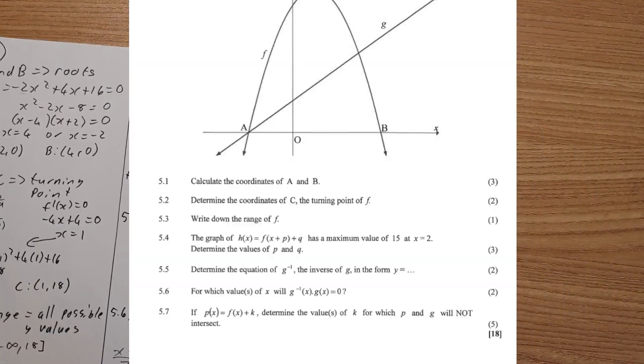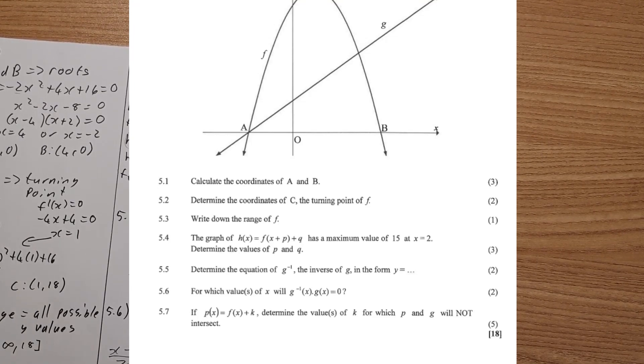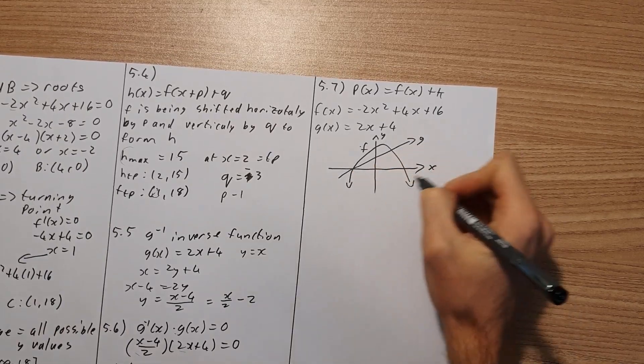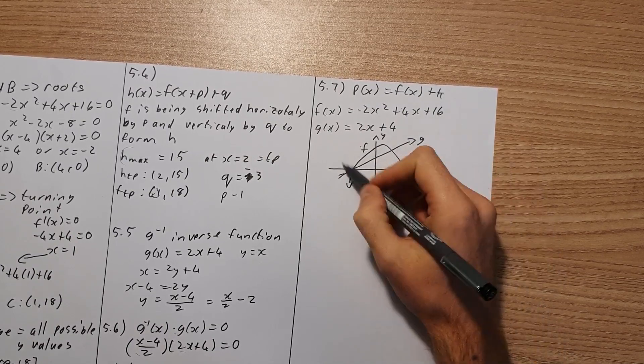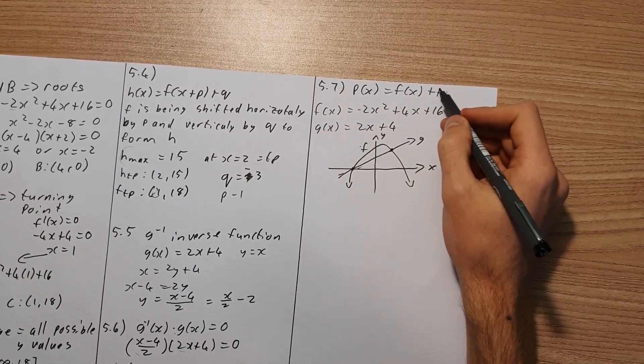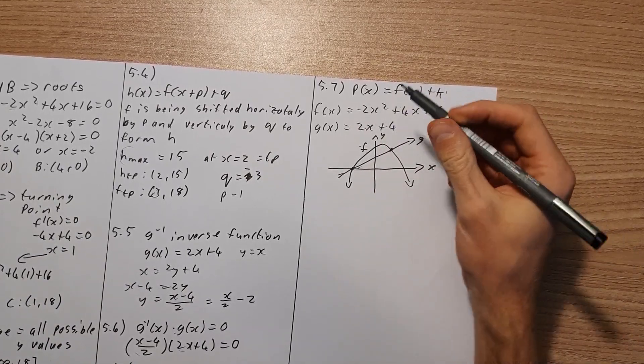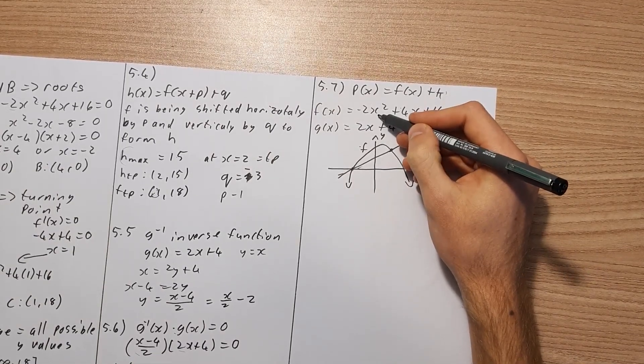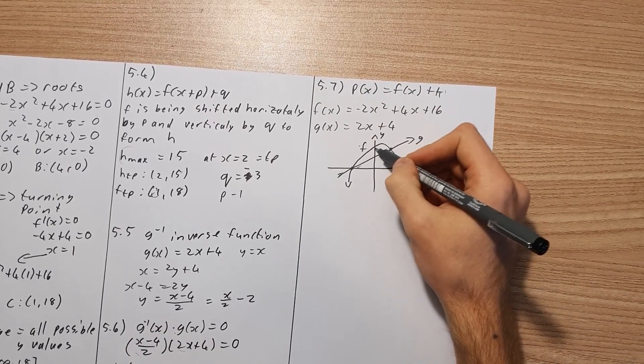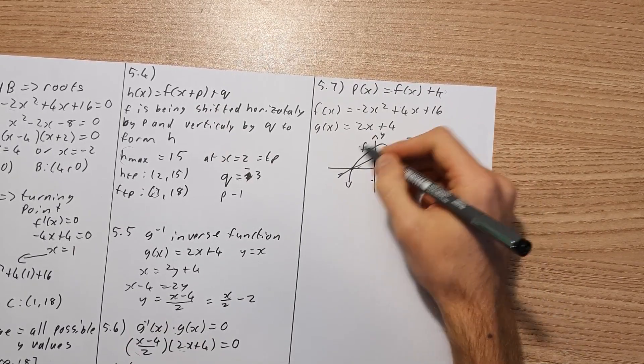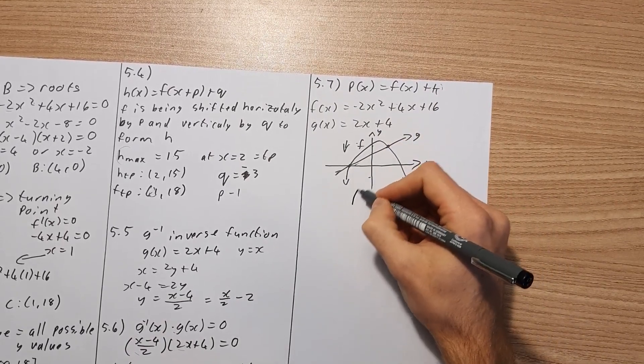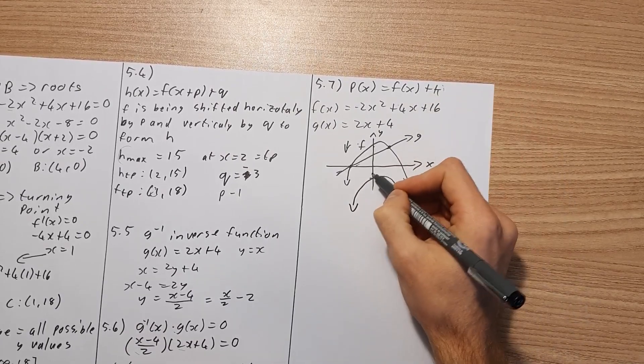Now let's have a look at 5.7. 5.7 is worth 5 marks over there. So let's say if p of x is equal to f of x plus k, determine the values for k for which p and g do not intercept. So here's our original graph that we have. We can see that f is intercepting, or g and f intercept each other at two points. But now we've created a transformation p, and we want to know what value of k, which is my y values, will p and k not intercept each other. So note that if I take f and I shift it up to create p, we're always going to have intercepts. Why? Because this runs down to infinity.